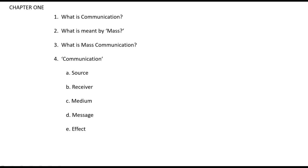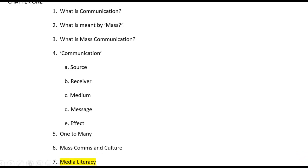Just to remind you about getting those in. In the first class, we did a big chunk of Chapter 1 in the textbook. In the last class, we talked about three things: the one-to-many, which is what comprises mass communication; the influence of mass communication on culture — culture being shared values of people; and then we talked about media literacy, which is the goal of this class — to make you and us smarter about media.